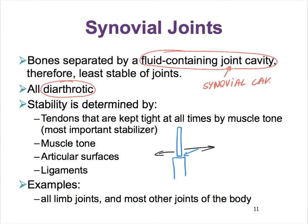Compare that to this scenario where one bone has an articular surface with a nice cavity in it, such that the other bone has a surface that is more rounded—like the head of the femur—and can nicely fit in there. So that head is not easily going to slip out because it's hugged by the cavity of the other bone.